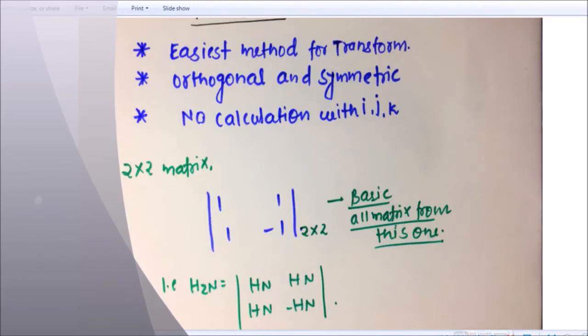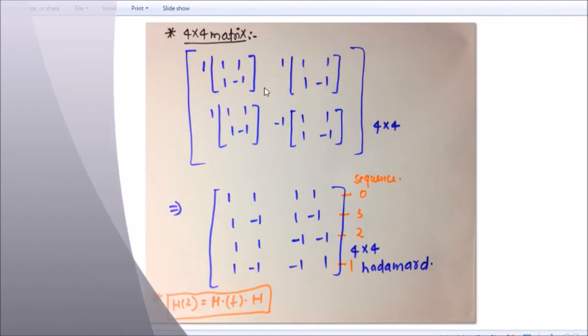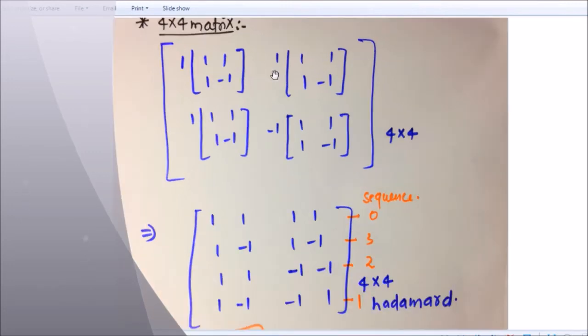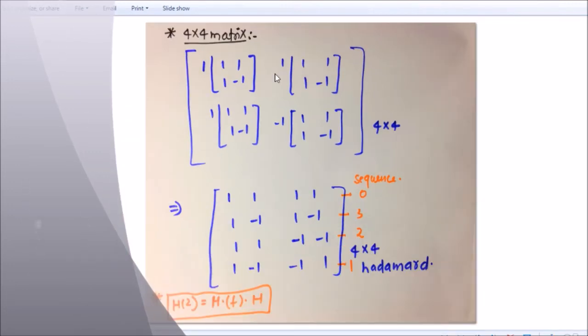So let's see about further. After this, you can make 4 into 4 matrix. So 4 into 4, how to do 4 into 4? You don't need to multiply like 4 into 4 in very lengthy way. You can easily do it here.